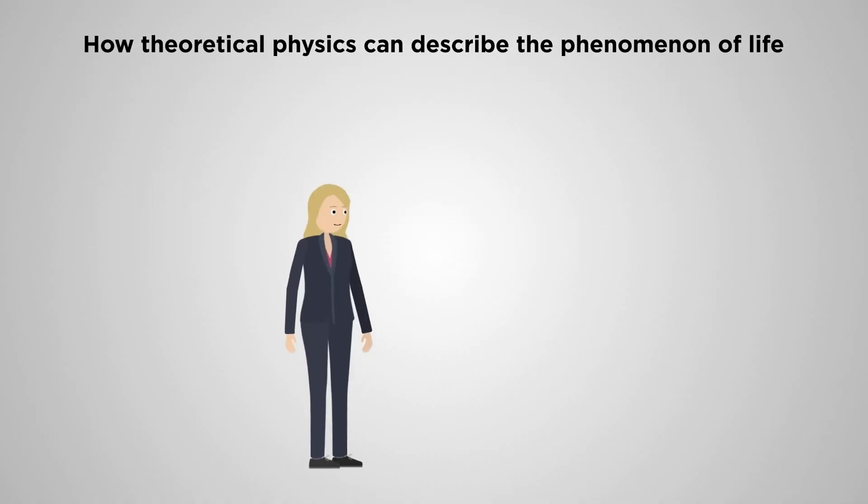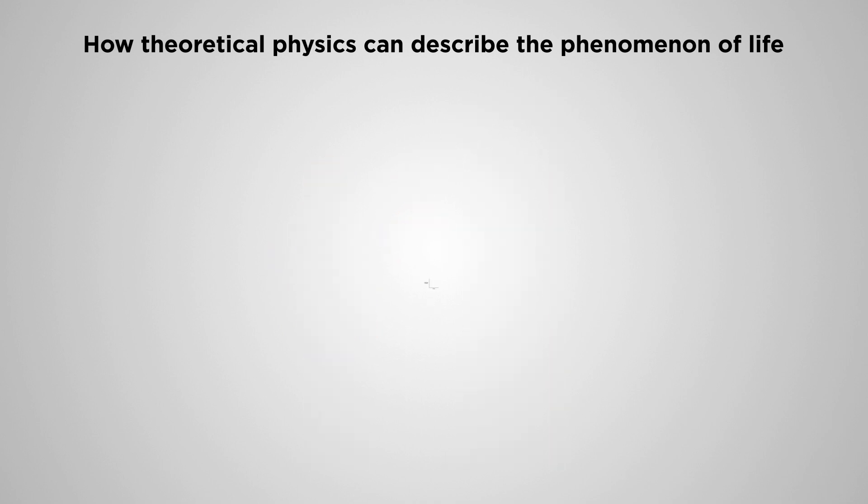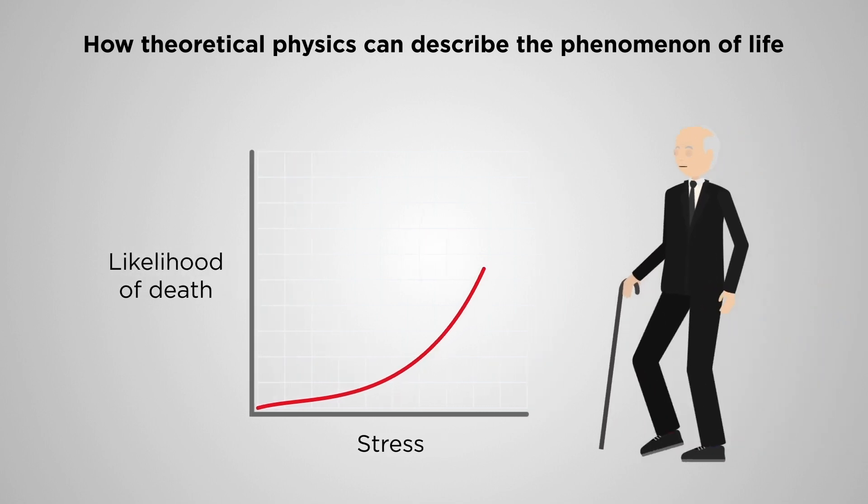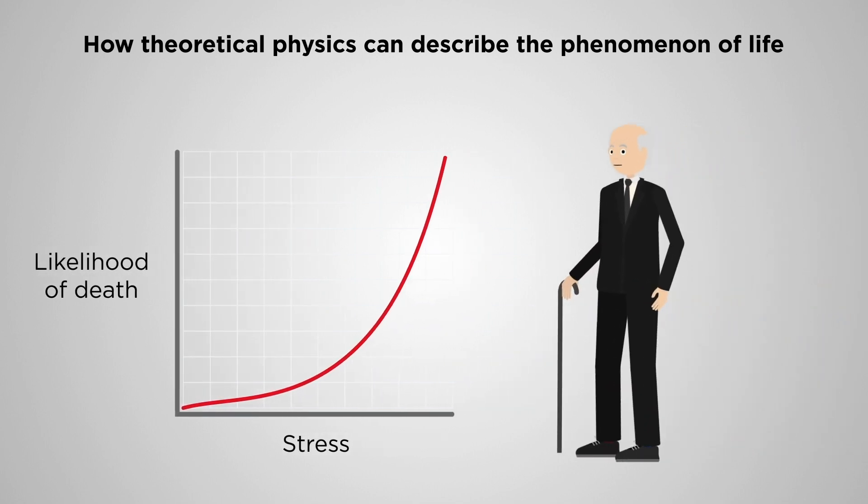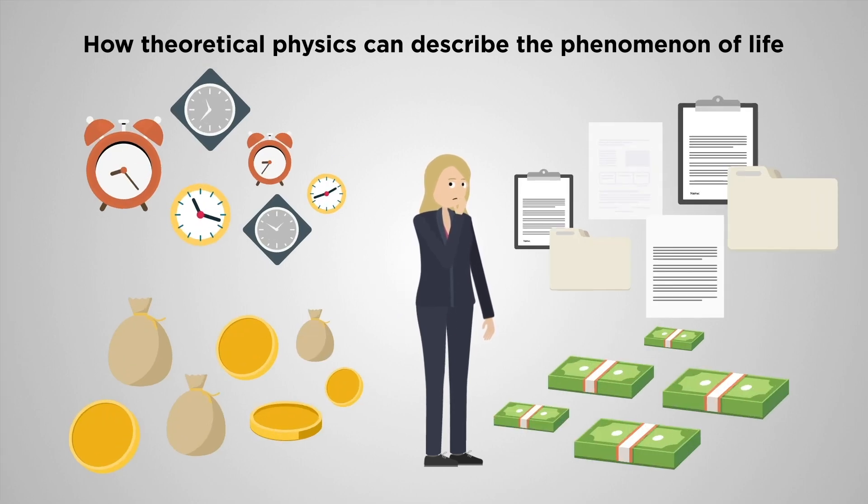The main difference between living and non-living things is that living organisms actively attempt to minimize the likelihood of death. The specific indicator of the likelihood of death is stress, as defined by Hans Selye. But how can attempting to minimize stress dictate the behavior of living beings?